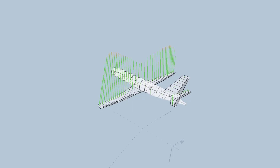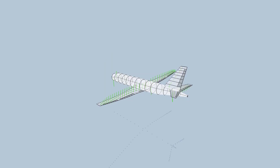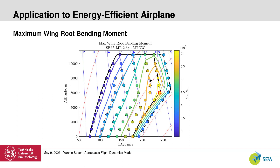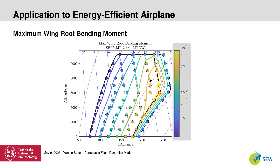The aircraft is automatically trimmed at numerous operating points. Interactions with 1-cosine gusts of various lengths are then simulated at these trim points to calculate the maximum loads that occur. In the flight envelope, the different trim points are shown by true airspeed, altitude, equivalent airspeed, and Mach number. The wing root bending moment is color-coded, and it can be seen that the load increases with increasing equivalent airspeed.